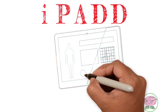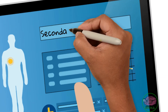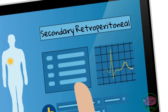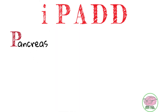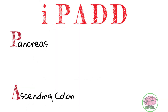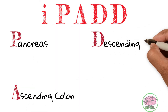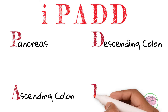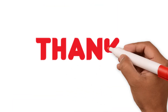The other mnemonic is iPad. We use this mnemonic to remember the secondary retroperitoneal organs. P is for pancreas, A is for ascending colon, D for descending colon, and the other D for duodenum.